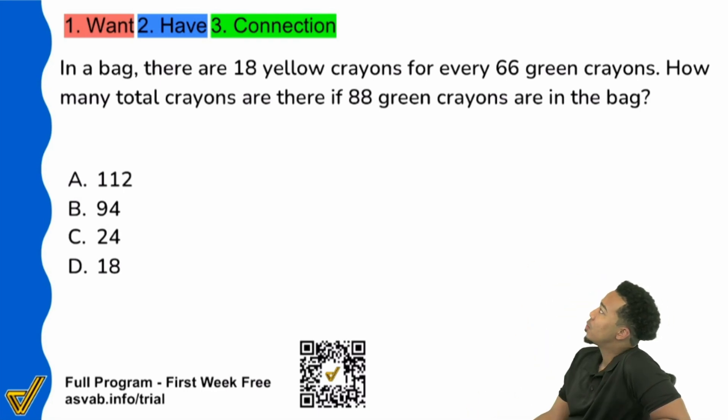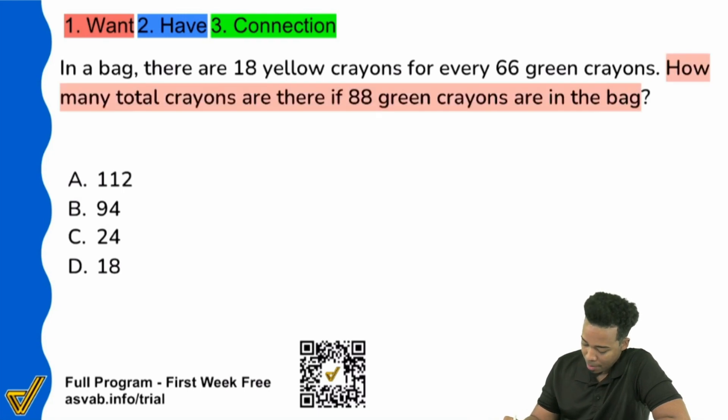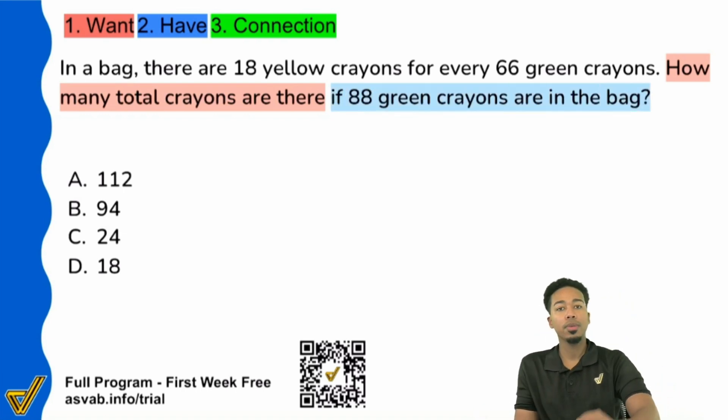Starting off, we see here that the question is the first thing we should always look at. What is the question telling us to do? So right here it says in red, how many total crayons are there? And it gives you some extra information. It says if 88 green crayons are in the bag. So it might be pretty easy to tell that this is a proportion question for the simple reason being that we are making comparisons. Notice how it says how many total if we have this many green? And if you briefly look at the first sentence, you might see this says 18 yellow crayons for every 66 green. So we are comparing two things here. We're comparing crayons to crayons in both sentences.